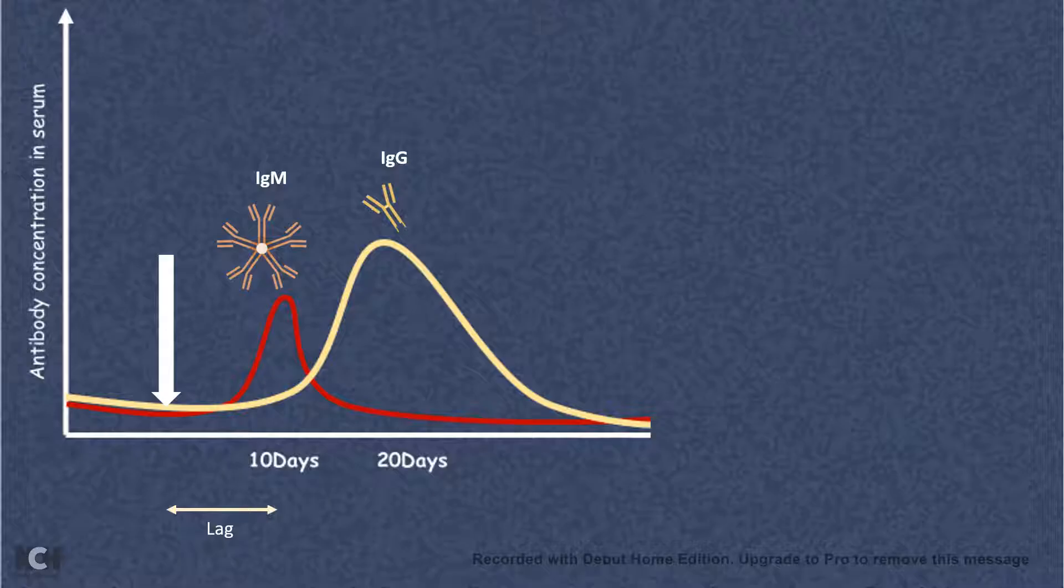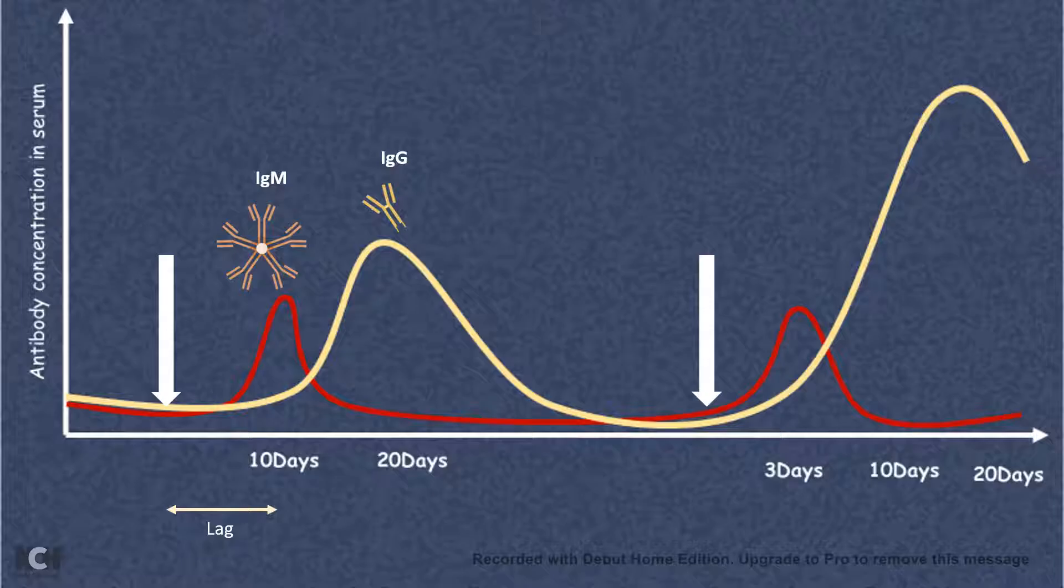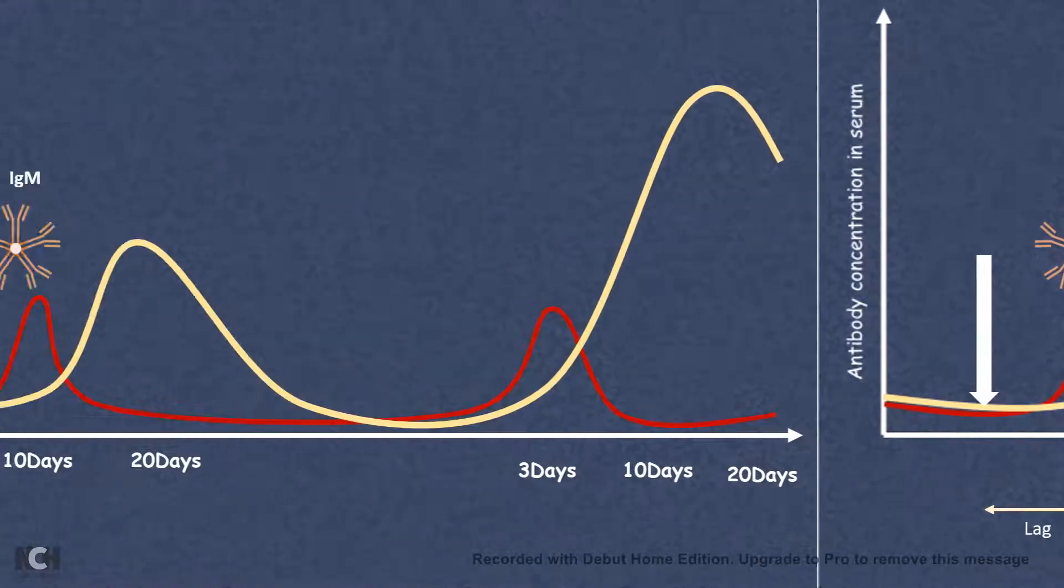This immune response is known as primary immune response, whereas in case of secondary immune response, which is followed by another pathogenic invasion round, the antibody level increase is pretty quick.